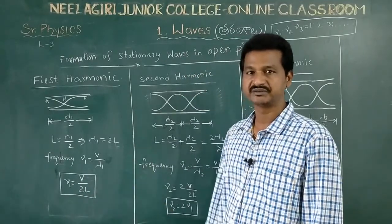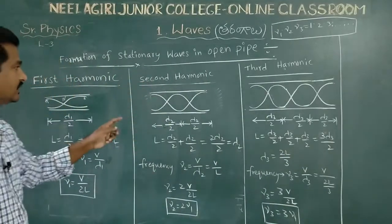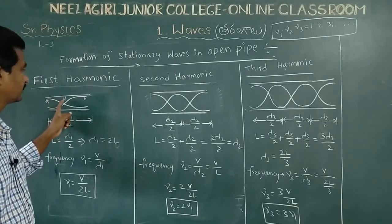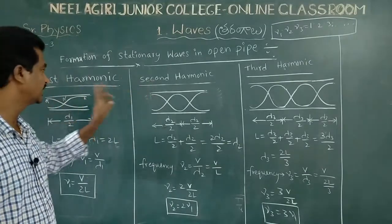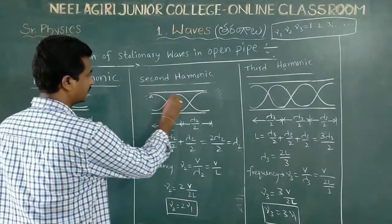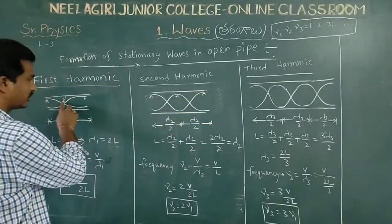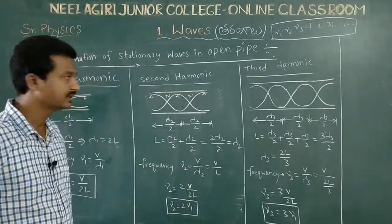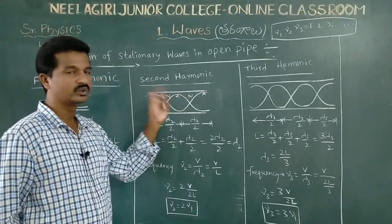Next, we find the second harmonic frequency. For the second harmonic, we have three antinodes and two nodes. So we have three antinodes — one, two, three — and two nodes are connected. The second harmonic has three antinodes and two nodes.